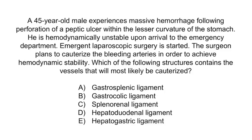A 45-year-old male experiences massive hemorrhage following perforation of a peptic ulcer within the lesser curvature of the stomach. He is hemodynamically unstable upon arrival to the emergency department. Emergent laparoscopic surgery is started, and the surgeon plans to cauterize the bleeding arteries to achieve hemodynamic stability. Which of the following structures contains the vessels that will most likely be cauterized? A: the gastrosplenic ligament. B: the gastrocolic ligament. C: the splenorenal ligament. D: the hepatoduodenal ligament. E: the hepatogastric ligament.